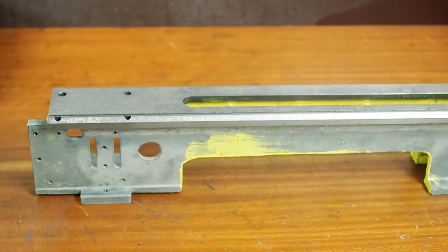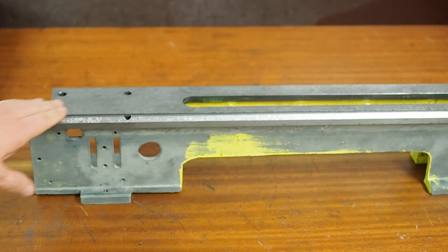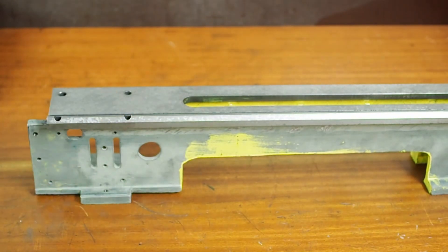Welcome back to the fourth in my series of modifying and restoring this old mini lathe. In this episode we're going to be looking at the headstock.